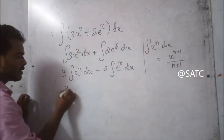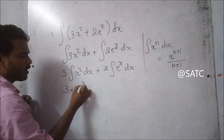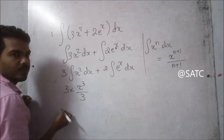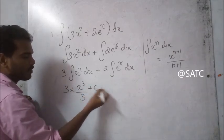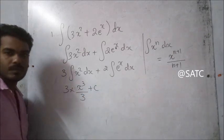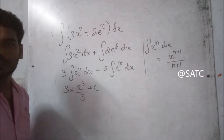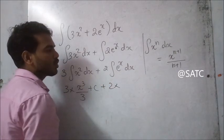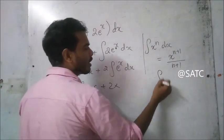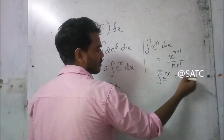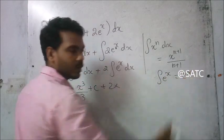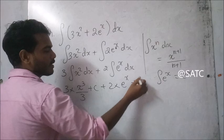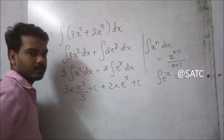Applying the formula, we get 3 times x raised to 3 divided by 3, plus a constant C. For the second term, the integral of e raised to x is e raised to x itself, so we get plus 2 into e raised to x, plus constant C.